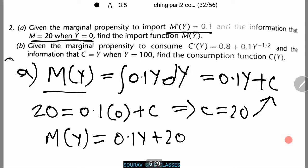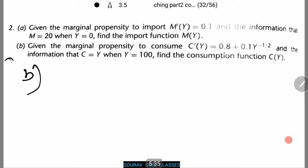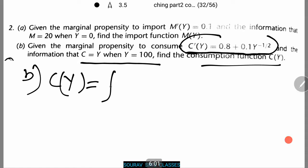Let us do number b in a similar manner. Now in the next case we are given the MPC or marginal propensity to consume. That is C'(Y) equals 0.8 plus 0.1Y to power minus half. And the given information is that C equals Y when Y equals 100. Now we need to find the consumption function. The consumption function similarly can be written as C(Y) equals integration of the MPC function, which is 0.8 plus 0.1Y to power minus half dY.